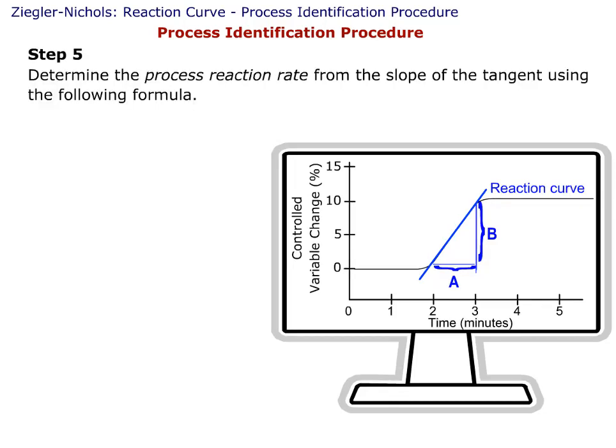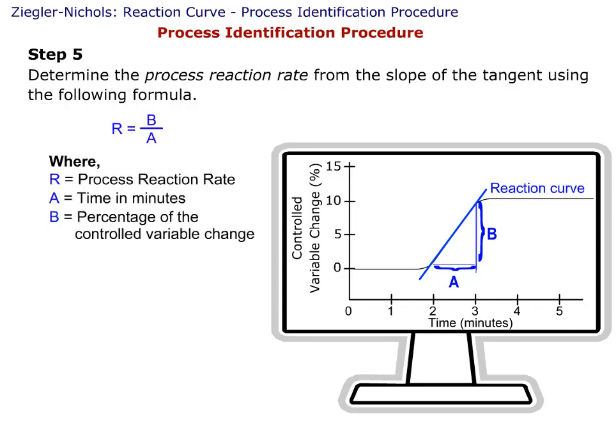Step 5: Determine the process reaction rate from the slope of the tangent using the following formula. Step 6: Calculate the unit reaction rate, R equals B divided by A, where R equals the process reaction rate, A equals the time in minutes, and B equals the percentage of the controlled variable change.